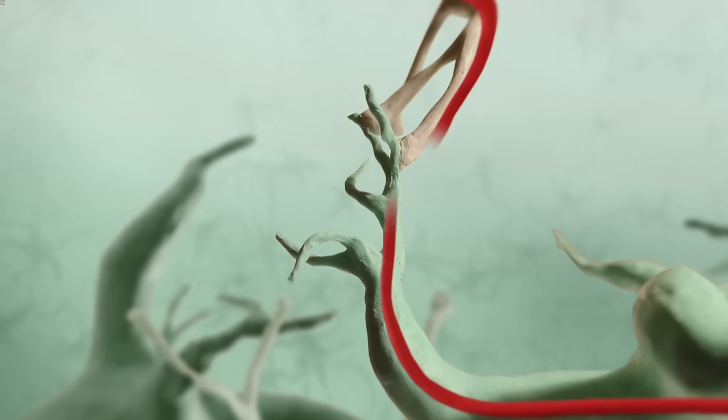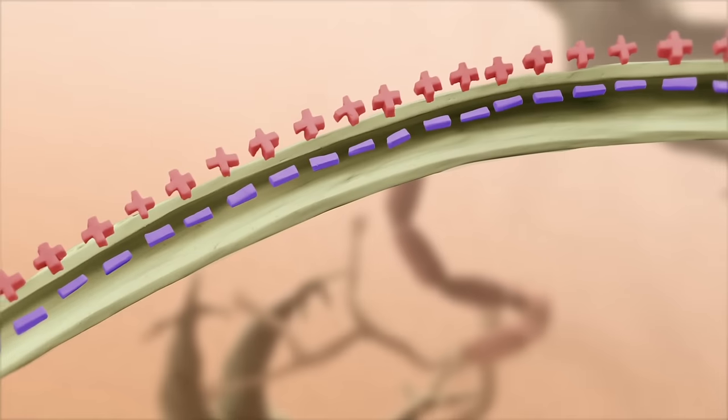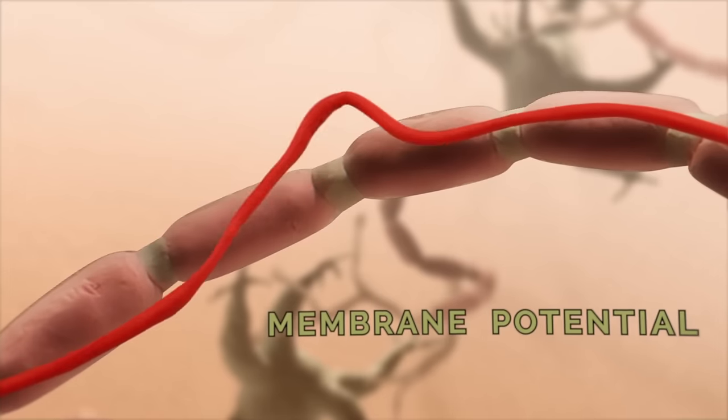A signal received by a dendrite is passed to the cell body. If there is sufficient depolarization of the cell body membrane to initiate an action potential, then an action potential is sent down the axon.